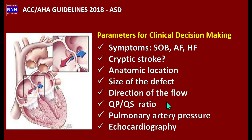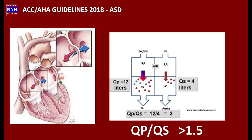If someone has developed significant pulmonary hypertension, they may not benefit from device or surgical therapy. That is why echocardiography is the central theme in diagnosing the location and size of the atrial septal defect, its hemodynamic effects, and how well it can be fixed in the cath lab using 2D echocardiography or TEE — without surgical intervention.